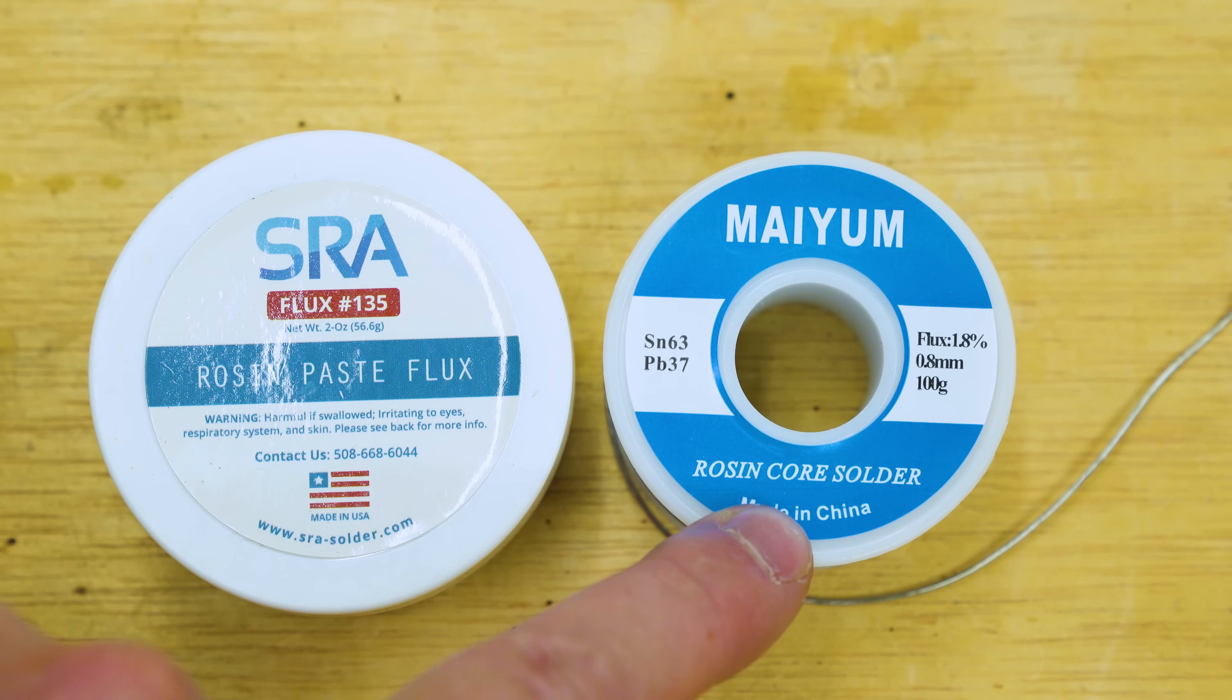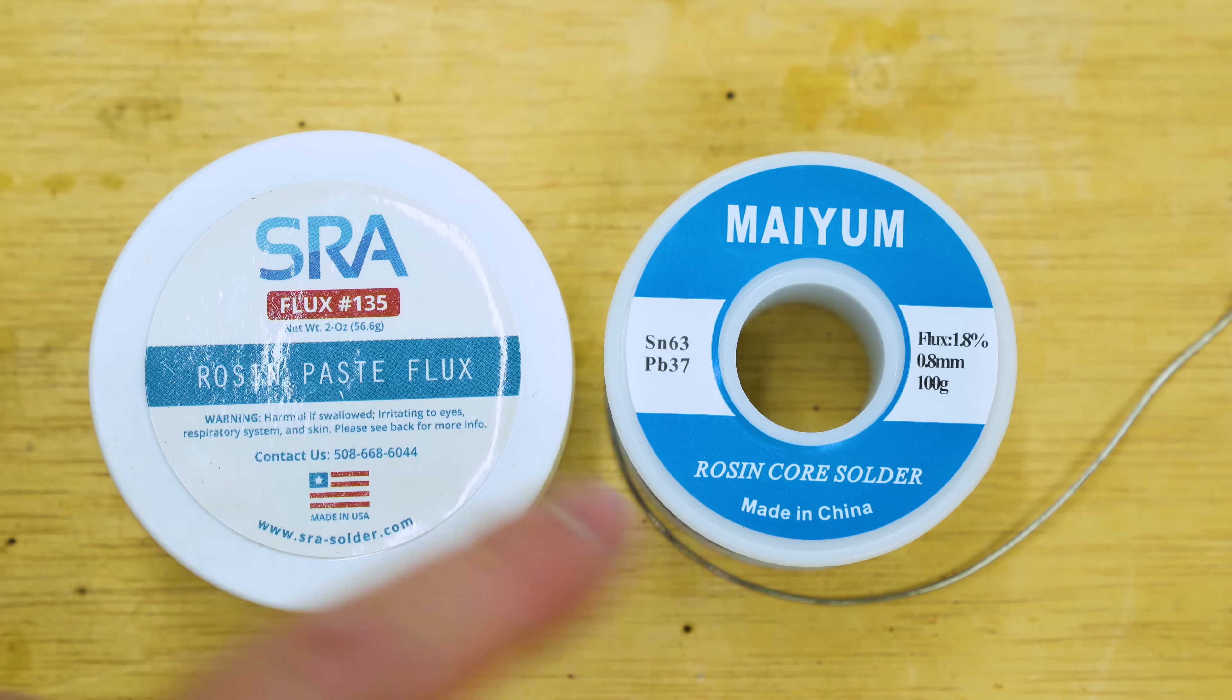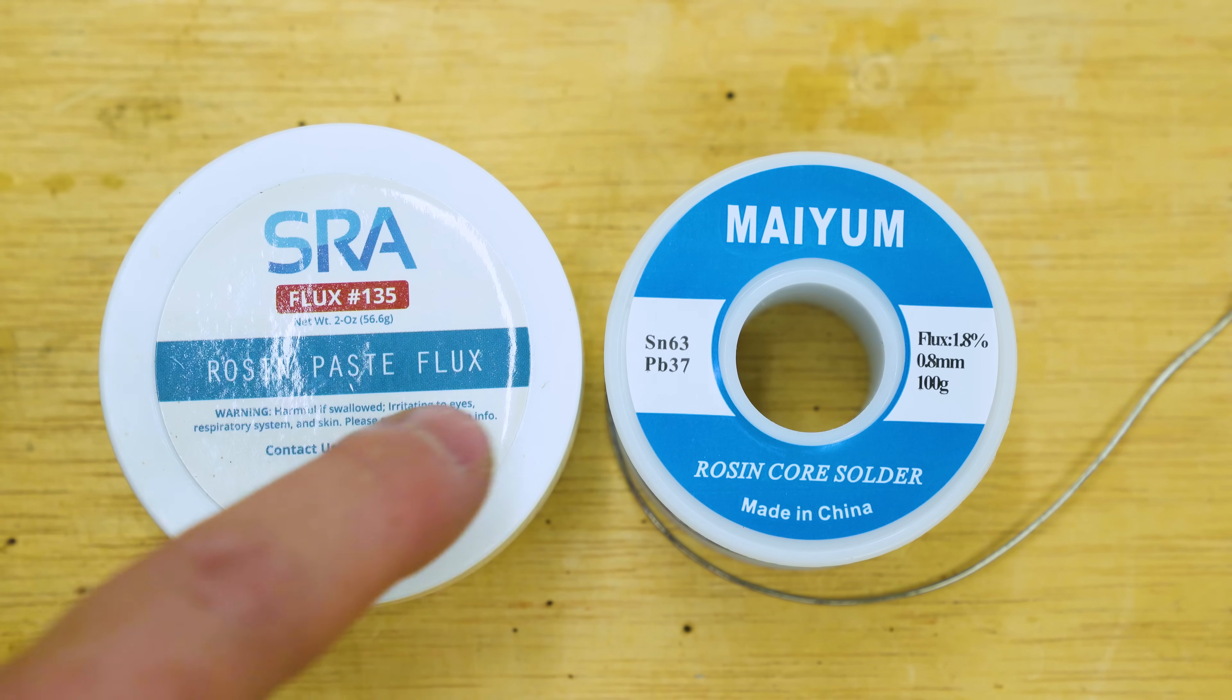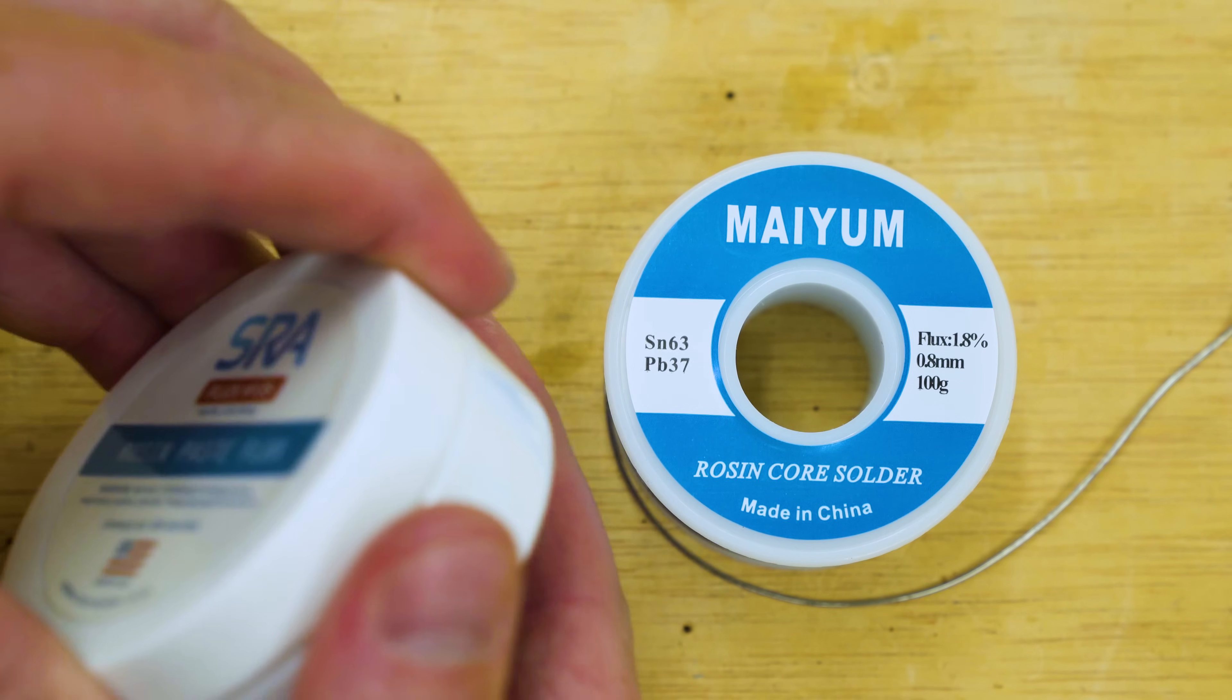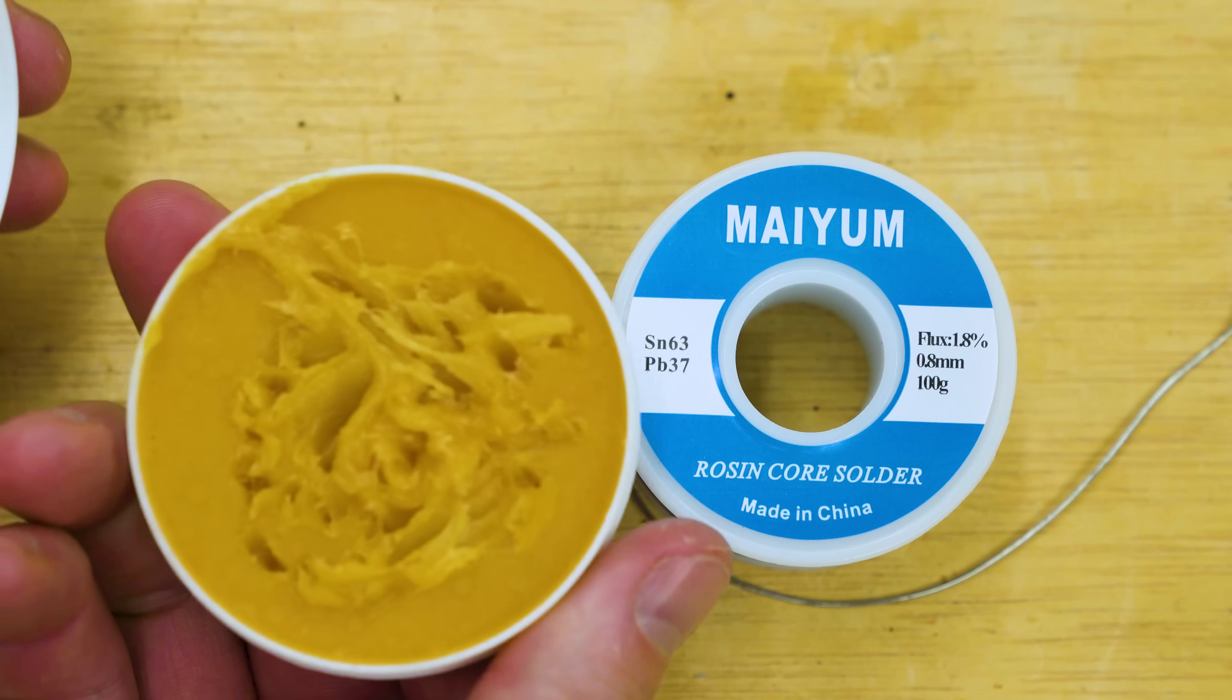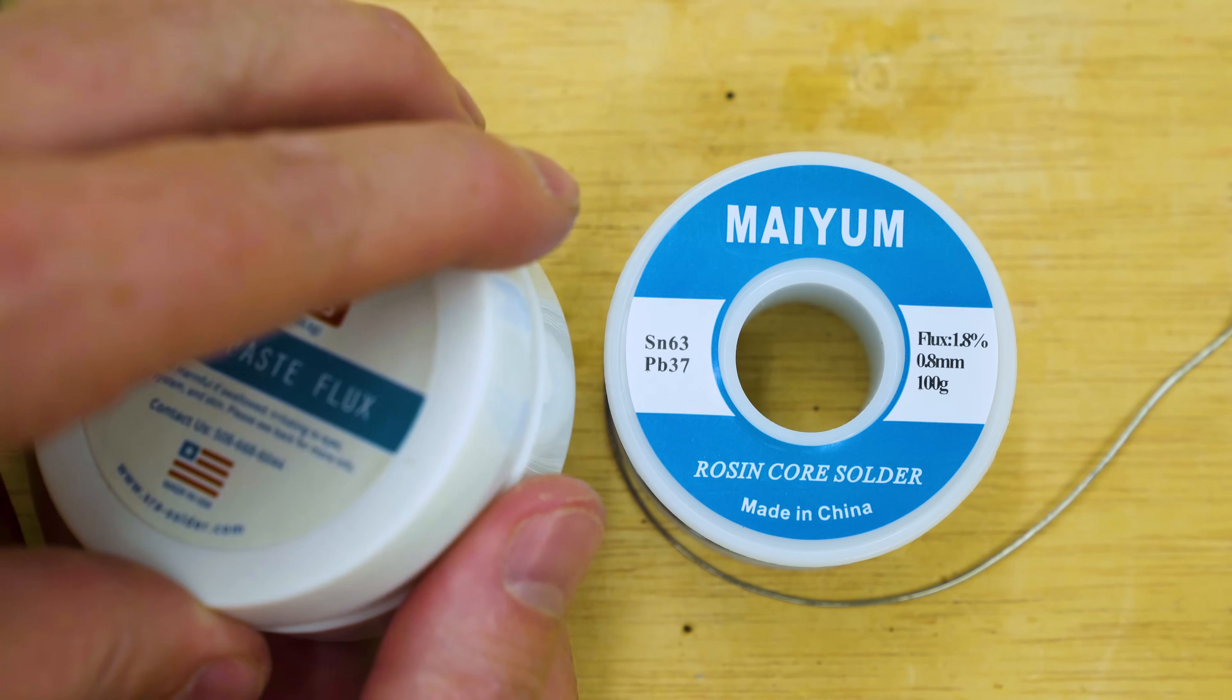And I highly recommend getting something like this that's rosin core. So it's got this rosin paste flux, it's got this inside of it. So it's got both the solder and the rosin and it just makes the job that much easier. You don't have to deal with this stuff quite as much, though you can still use this as well. It doesn't hurt.